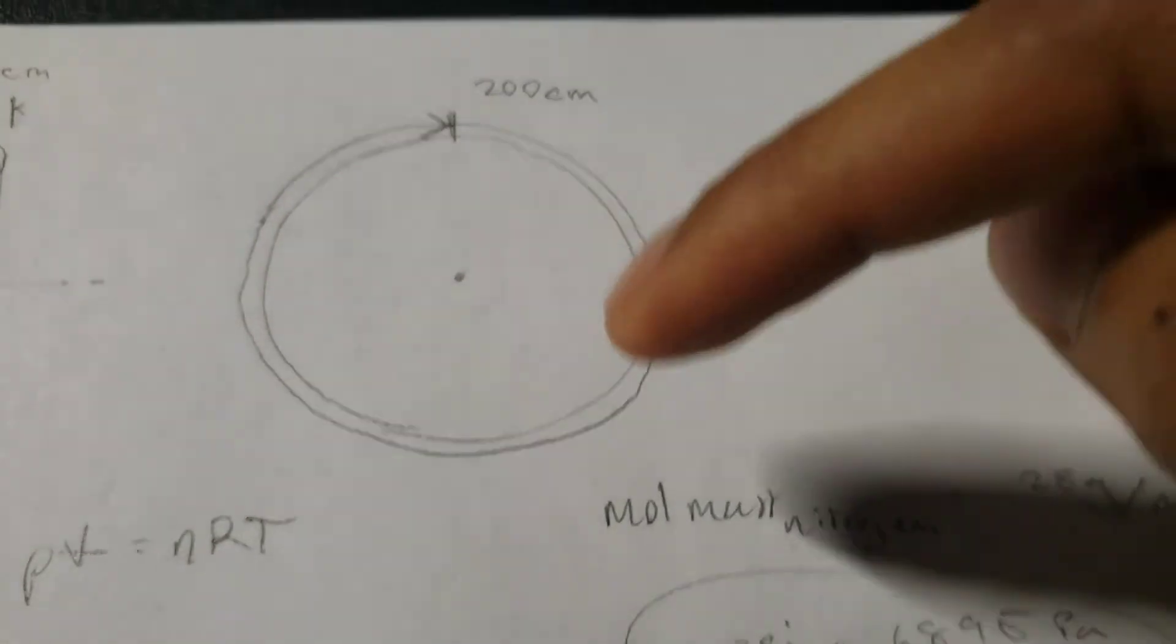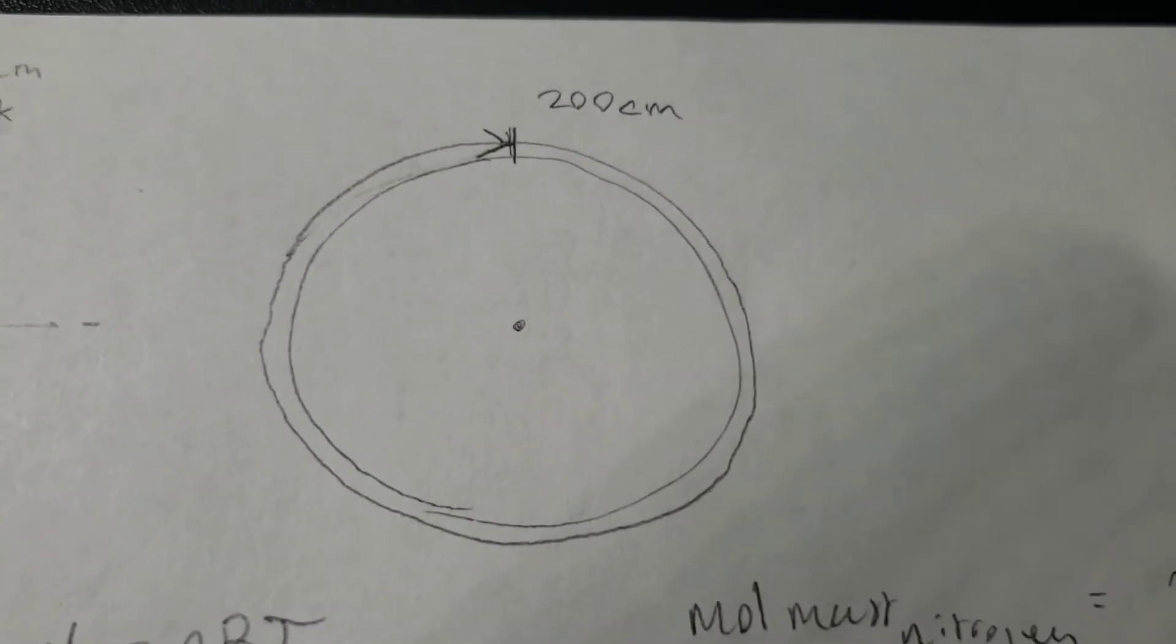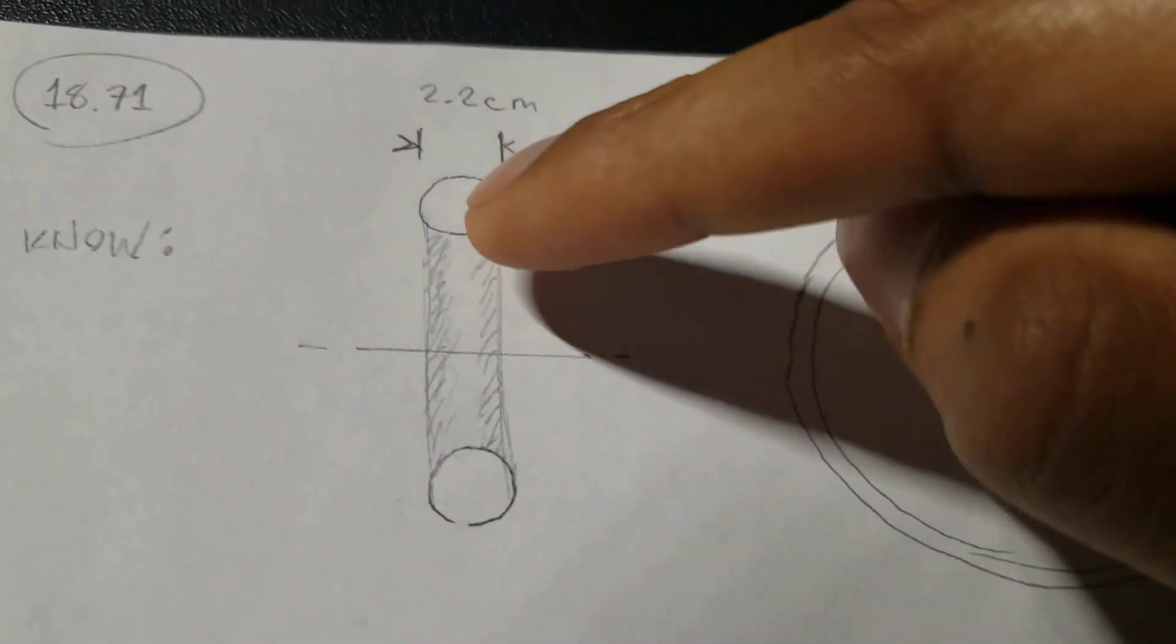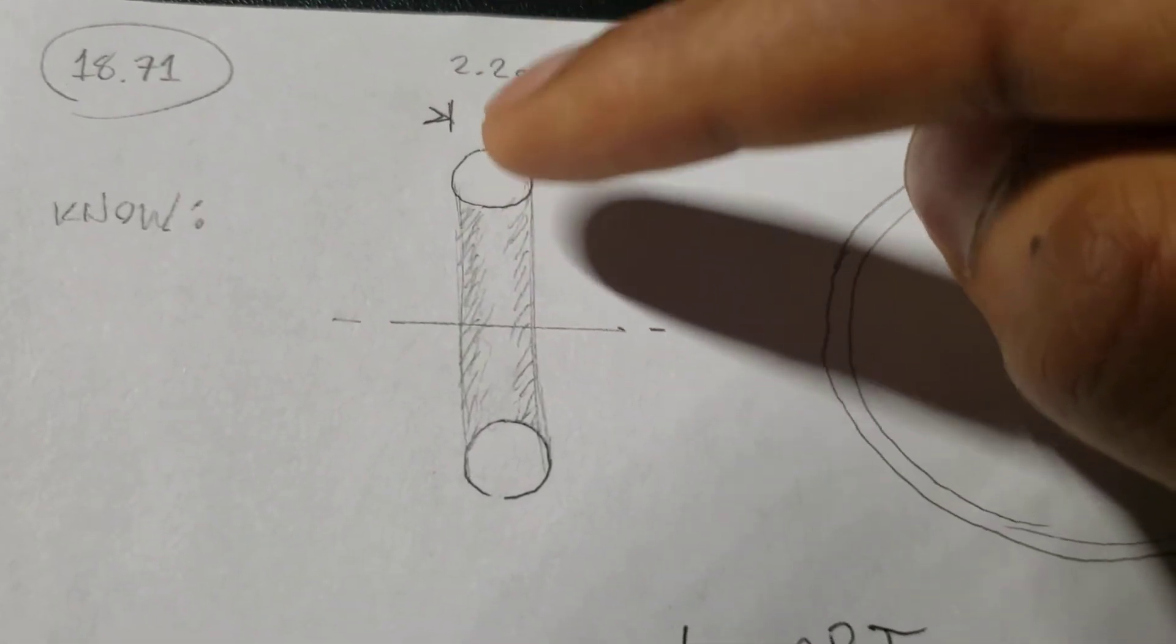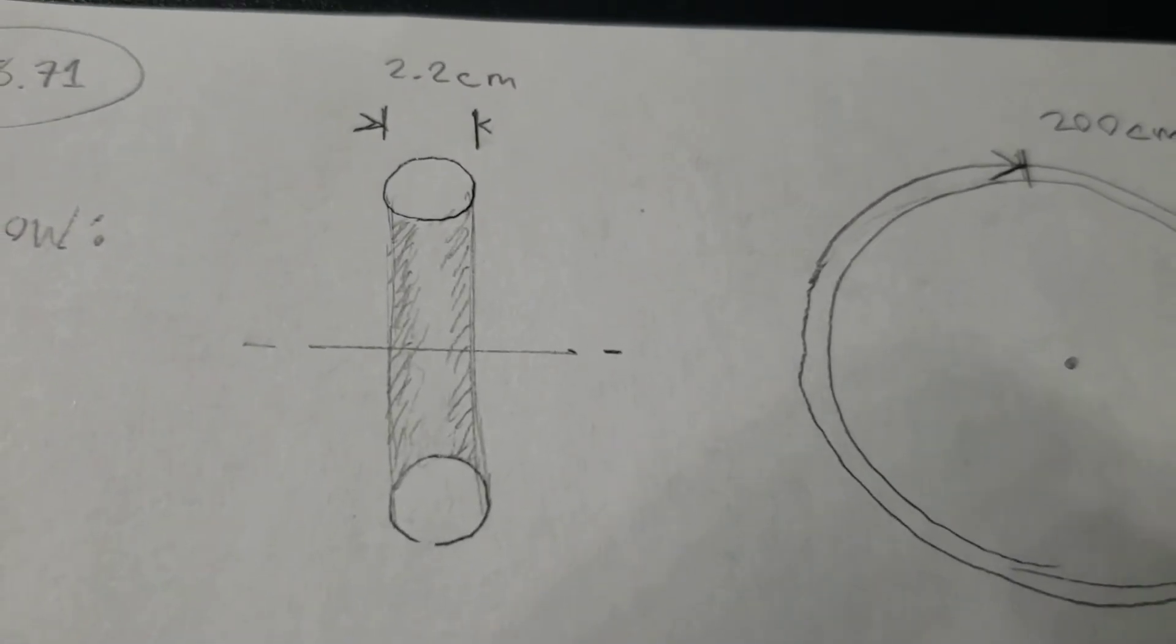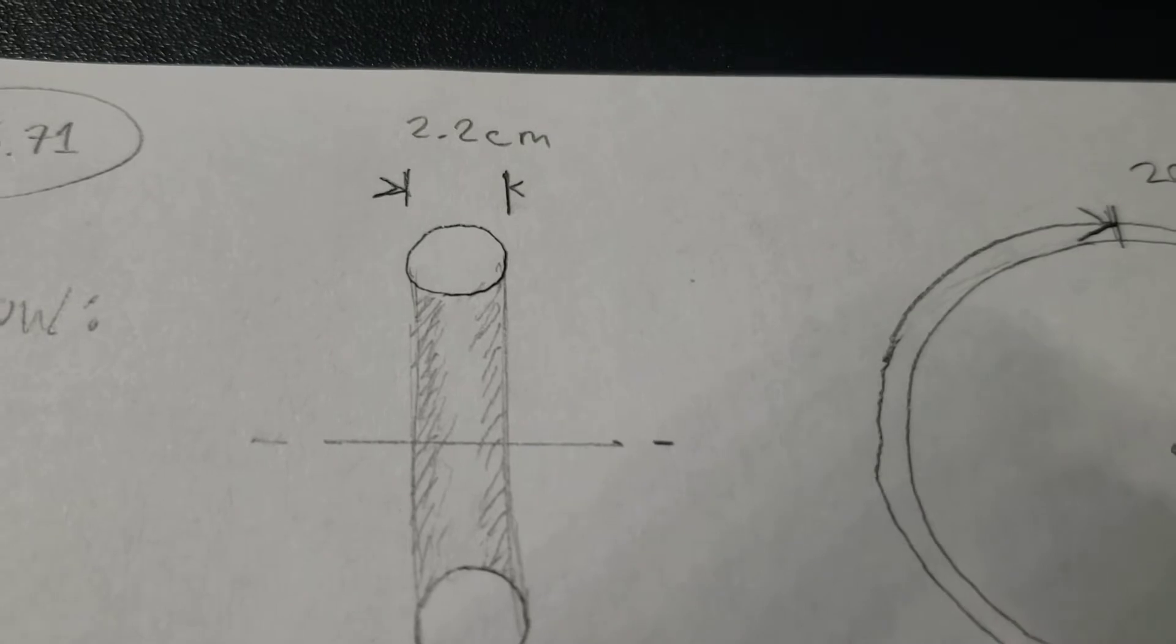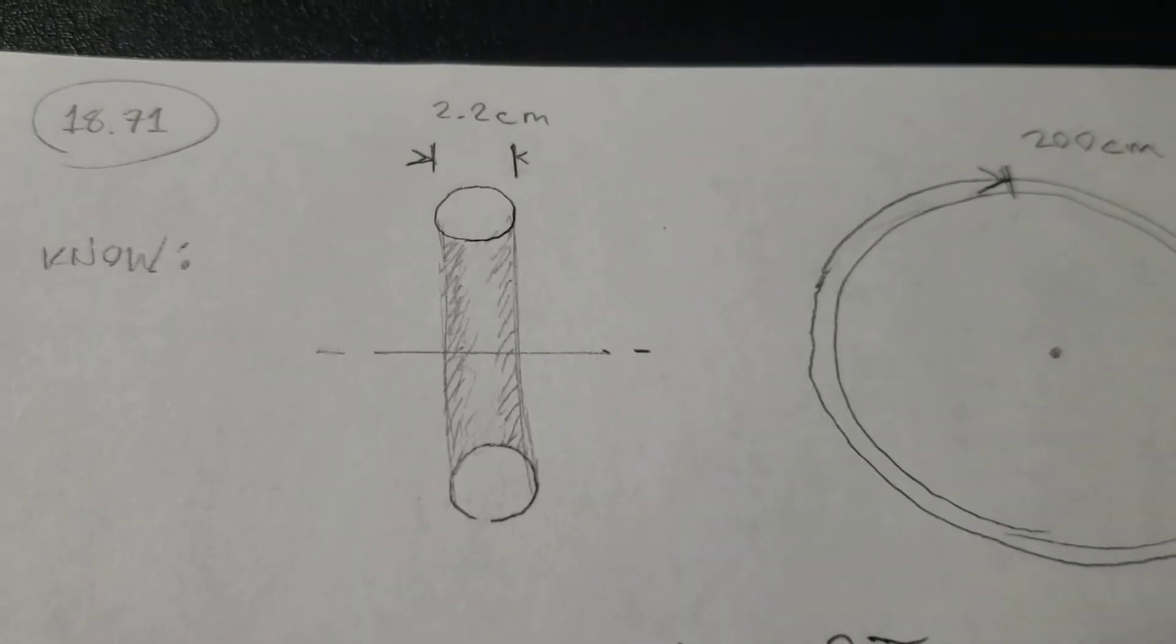So, you have the circumference of the wheel or the distance around it is 200 centimeters or 2 meters. And then we have this cross section of the wheel. So, this would be like the circle of just an end of the tubing if you were to cut the tubing in half.